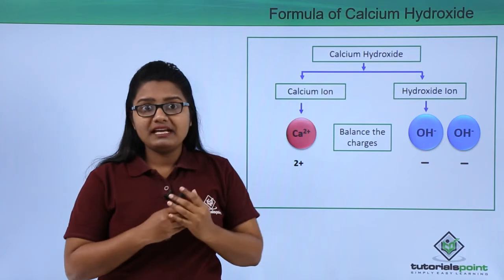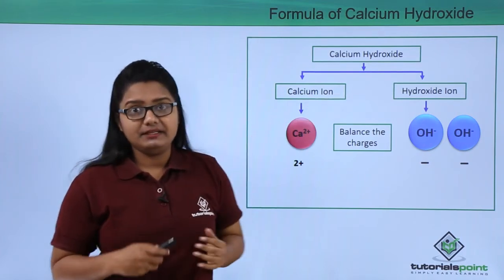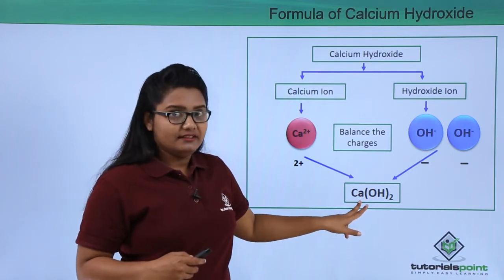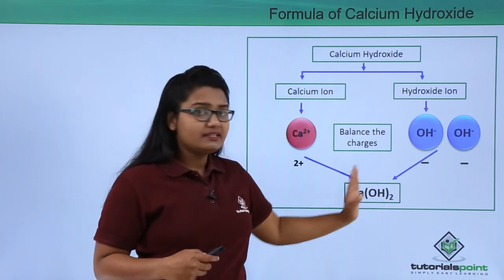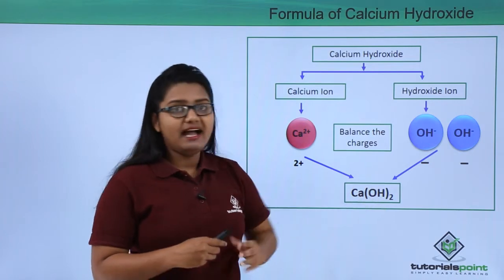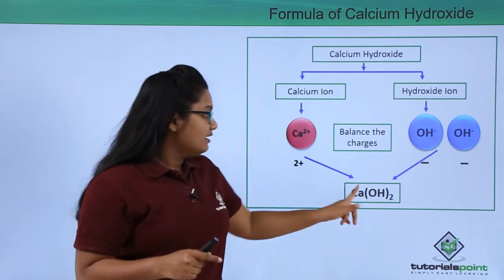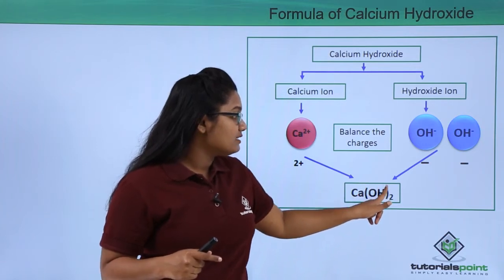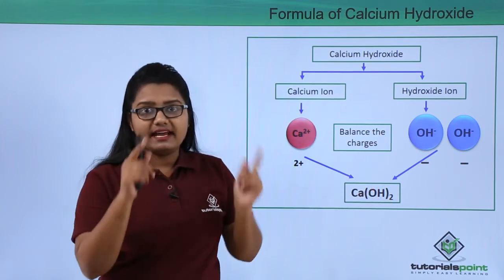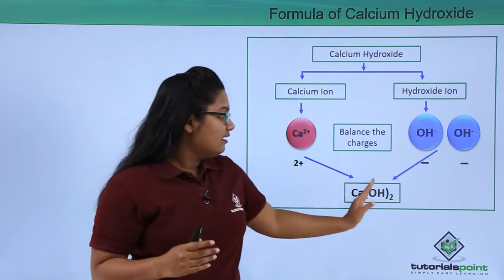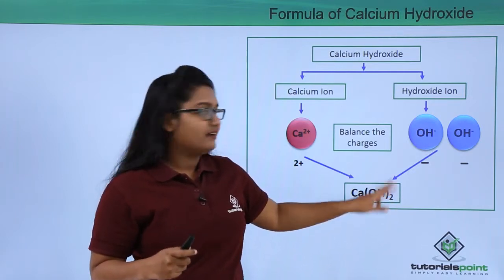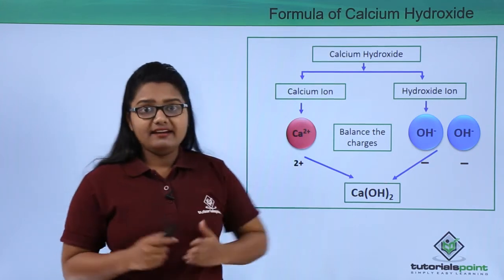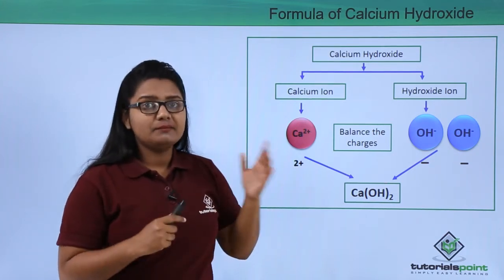Now we are ready to write the chemical formula of calcium hydroxide. There is a little trick when a polyatomic ion is involved: calcium can be written normally, but when you come to hydroxide — a polyatomic ion — you need to put it inside brackets, and then write the number of hydroxide ions outside the brackets, which is 2. So the formula is Ca(OH)₂.